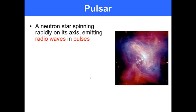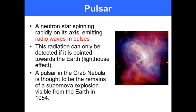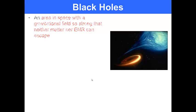A pulsar is a neutron star spinning rapidly on its axis, emitting radio waves and pulses. This radiation can only be detected if it is pointed towards the Earth, so it's sort of like a lighthouse. A pulsar in the Crab Nebula is thought to be the remains of a supernova explosion that was visible on Earth in 1054 AD, over a thousand years ago.